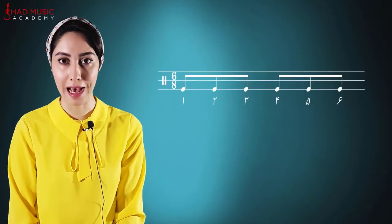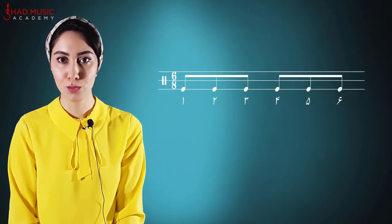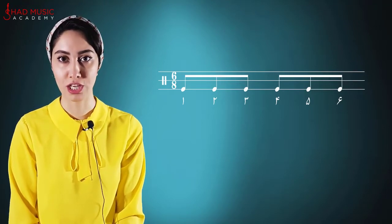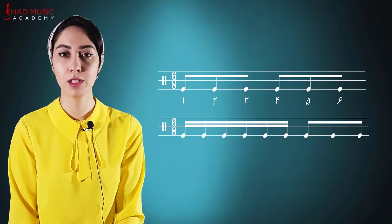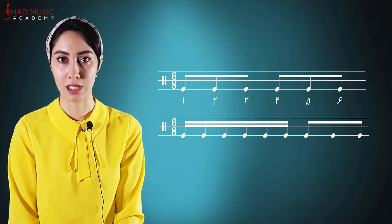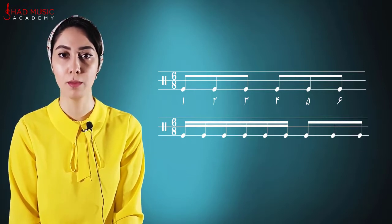If you have a 6-8, you will have a 6-8. If the first one is 3-2, then it will be 2-2-2-3, then it will be 6-2-3. Then we can see 6-2-3. When we see 6-2-3, we can see that we can see that we can see.